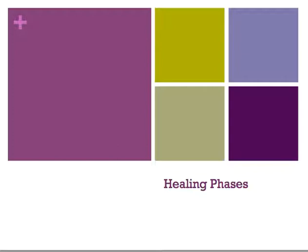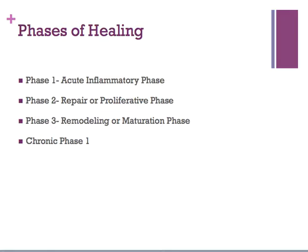The book does a good job discussing the different phases of healing. Phase 1 is called the acute inflammatory phase. Phase 2 is the repair or proliferative phase, and then phase 3 is the modeling or maturation phase. All these phases take place and we try to categorize different characteristics of each phase. There's a timeline, but they overlap, so phase 1 doesn't distinctly end right before phase 2 begins.